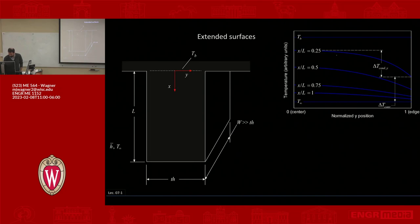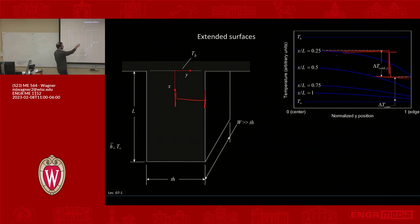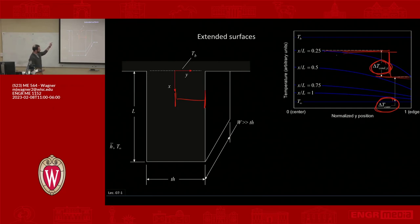What we want to do is get to a point where we can say that temperature drop in y is small enough compared to other temperature drops that we can neglect it. The delta T between the centerline and the outer edge of the fin is due to conduction in y. There's another delta T from the surface to the surroundings. If that conduction delta T is small relative to the convection delta T, we can model this as a 1D problem.